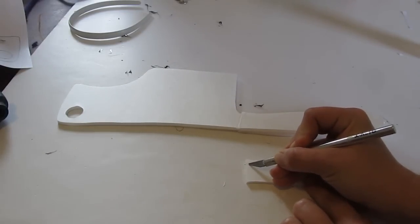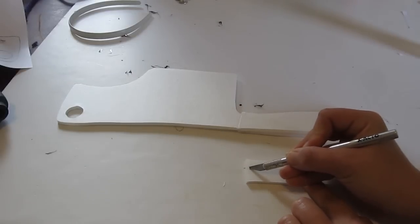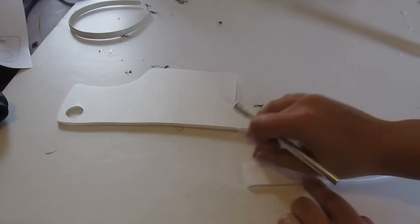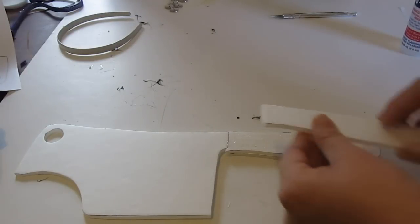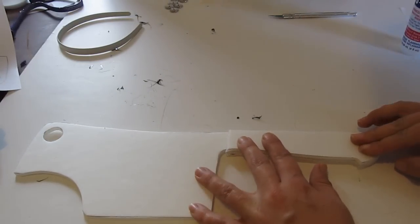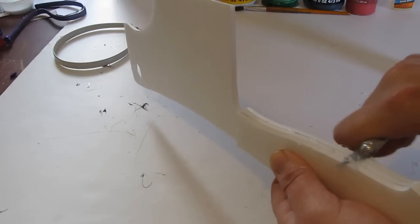And then cut those pieces out of foam board. You can do this project in cardboard too if you want. Now, let's put it together. Cut at an angle the handle pieces like this. That's the end of the knife near the blade. And then glue them both onto the cleaver, one on this side and one on the other side.